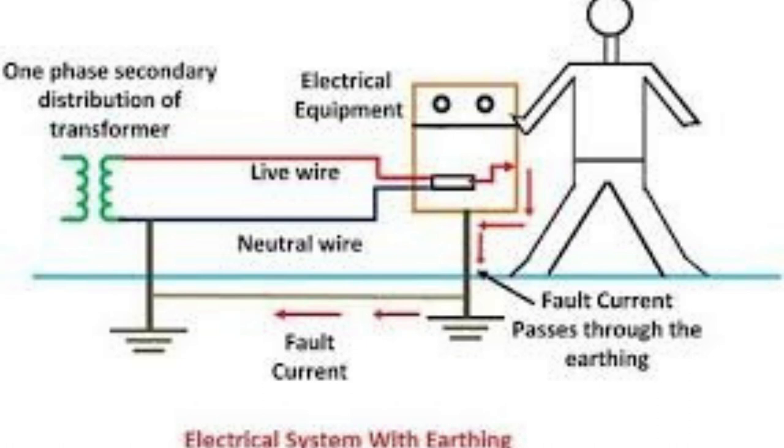Three, the grounding point is situated between the equipment's neutral and the earth, while earthing is situated between the body of the equipment and the ground.